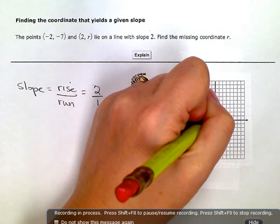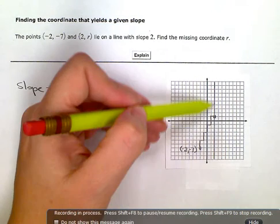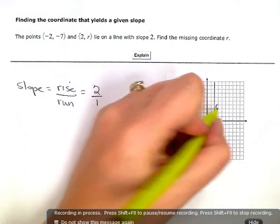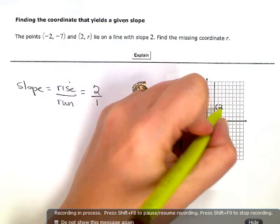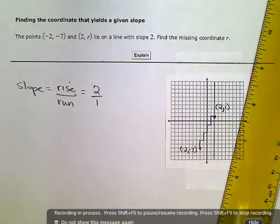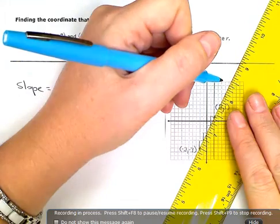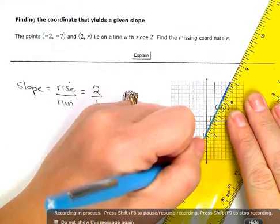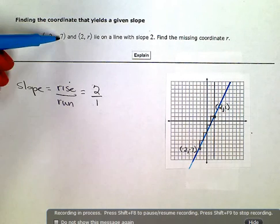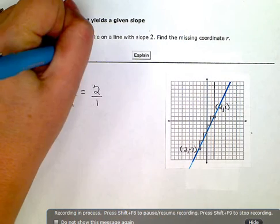And I hit my line. So I know that my second coordinate is right here at 2 over, 1 up. Now I'm going to connect these two and go back and look at the problem.